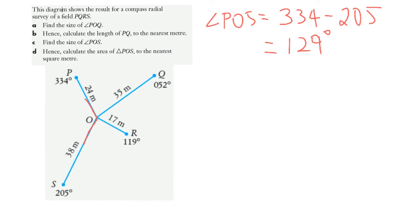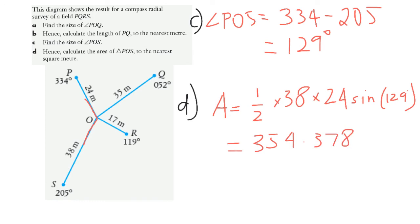And our last thing we're asked to do here for part D is find the area of this triangle. So my area is going to be half by 38 by 24 sine 129, which gives me 354.378, which I'm going to round to 354 square meters as I'm asked to there. 354 meters squared to the nearest whole as well.